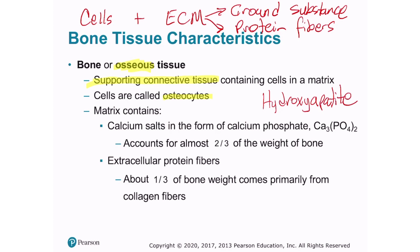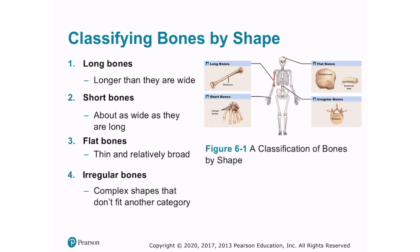The protein fibers most abundant in bone matrix are collagen fibers. If we were to break down a specific bone into its three components, we would find that between 60 to 70% of the bone is made of calcium salts in the form of calcium phosphate. The remaining 30% or so is made from collagen protein fibers. Only about 2% of a bone is actually made of bone cells — osteocytes and other types of bone cells.